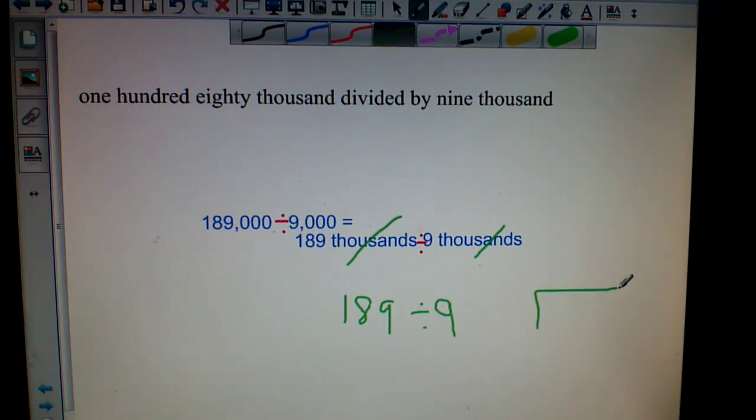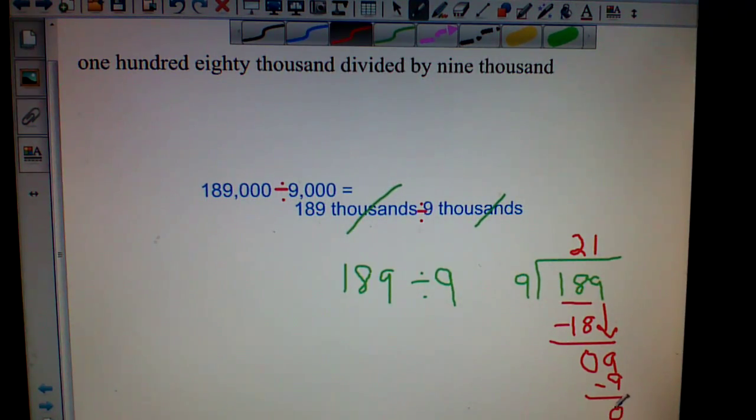You need to do long division. 189 divided by 9. Let's go quick. Can we divide 1 by 9? No. 18 by 9? Yes. How many times? 2. 2 times 9 is 18. Subtract is 0. Bring down the 9. Can I divide 9 by 9? Yes. How many times? 1. 1 times 9 is 9. Subtract 0. Bring down the answer is 0, so my answer is 21. So 189,000 divided by 9,000 is 21. That's our answer, okay?